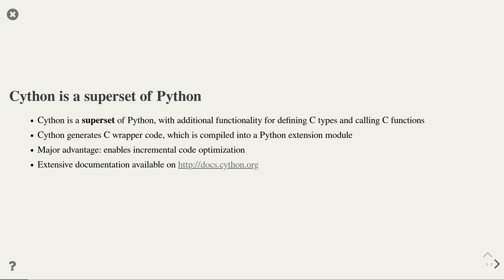Instead, the Cython code needs to be run through a Cython generator, which generates so-called C wrapper code, which in turn can be compiled with the C compiler and then results in a Python extension module that can be loaded just like any Python module. This approach has a major advantage. Since Cython is a superset of Python, any Python module is automatically compatible with Cython, which means that if you have a Python module that you want to speed up, you can simply convert it into a Cython module and then incrementally add more and more Cython keywords to improve the performance of that module.